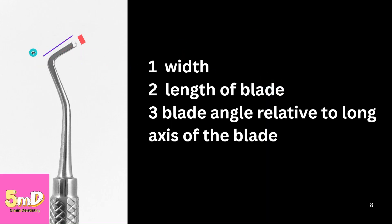So, the three-number formula: the first number denotes the width in tenths of a millimeter. If the first number is 15, then the width will be 1.5 mm. The second number is the length of the blade, denoted in millimeters. If the second number is 7, then the length of the blade is 7 mm.